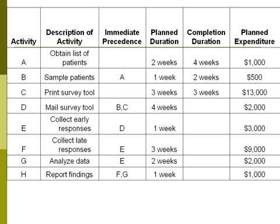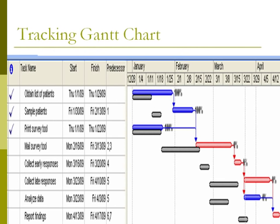We will use the data in this chart to find various calculations that will help a project manager determine the current status and future expectations of this project. Using the information in the table with the expected and actual durations, this tracking Gantt chart was created.